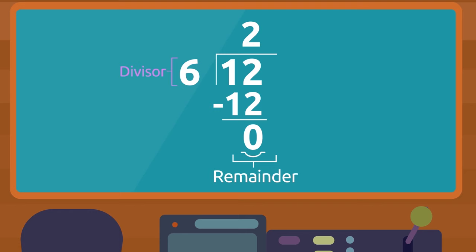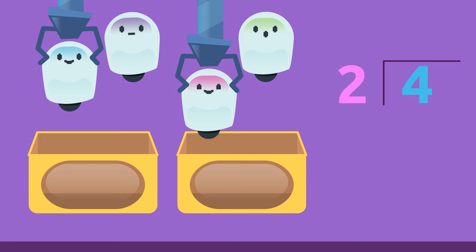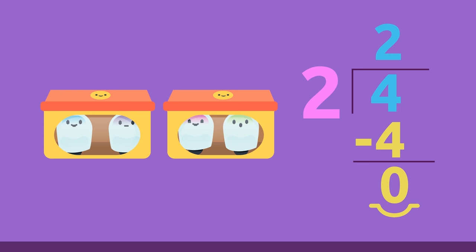When a number is divisible by another number, the number that we have divided it by is called the divisor. For example, if we have four robots and we want to put two in each box, there won't be any left over because the remainder of the division is zero. So four is divisible by two, and the number two is its divisor.